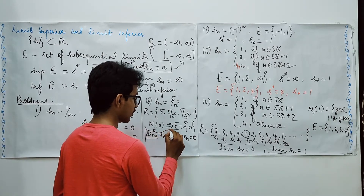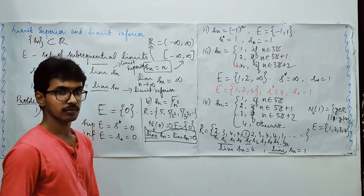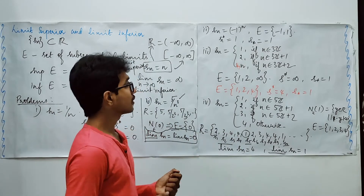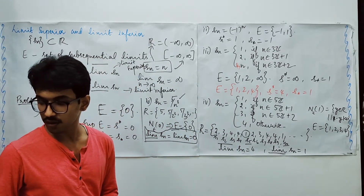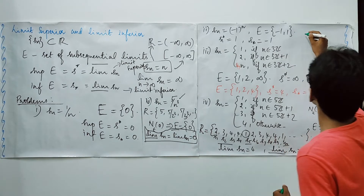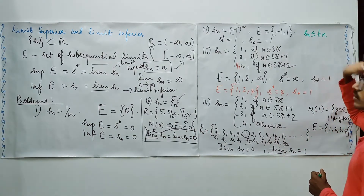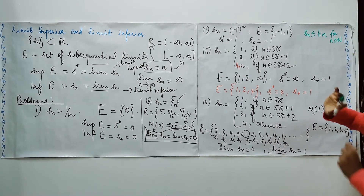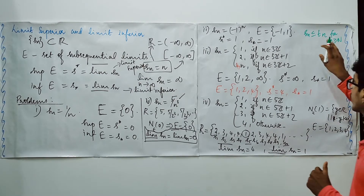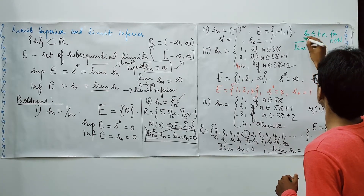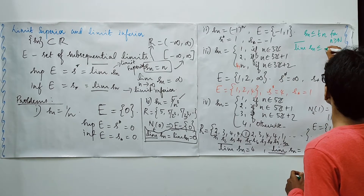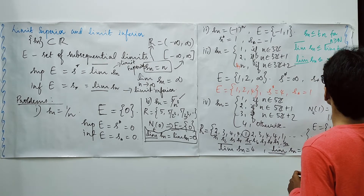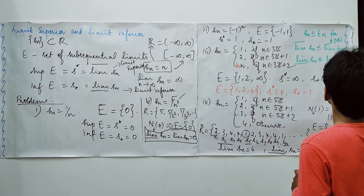Whenever limit lower bar and limit upper bar are equal, the sequence is a convergent one. Along with this, one more property: if Sn ≤ Tn for all n ≥ N (after a certain stage this is true), then limit upper bar of Sn ≤ limit upper bar of Tn. Similarly, limit lower bar of Sn ≤ limit lower bar of Tn.